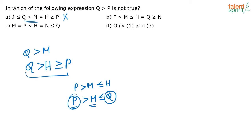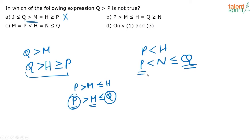Now let's look at option C. M is equal to P, P is less than H. If you combine these statements, P is less than H, and since H is equal to N, and that is less than or equal to Q — here also Q is greater than P. With option B we could not find the relationship between Q and P at all, whether who is greater or smaller. So in which expression is Q greater than P not true? The correct answer is option B.